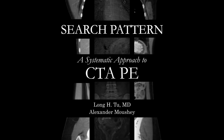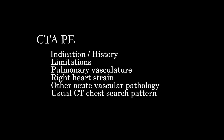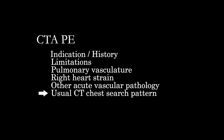Today we're going to talk about the approach to the CTPA, or CT chest for pulmonary embolus. As with other studies, first you want to get a sense of the clinical context, patient history, any known abnormalities, taking a look at priors. Then we'll quickly assess the adequacy of the study, go into each part of the pulmonary arterial vasculature, look for secondary signs of pulmonary embolus or right heart strain, and look at other acute vascular pathology highlighted by the contrast exam.